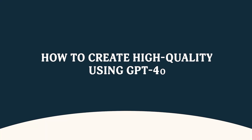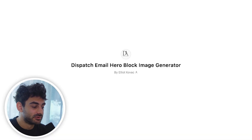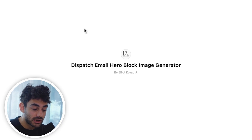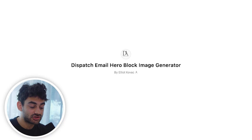Creating a high volume of ad creative is super important, which is why I want to focus on that. But one thing I have not seen anyone talk about or do properly is how to create good-looking emails using ChatGPT 4.0. I've spent around four weeks trying to nail this prompt, experimenting with many different angles, and I finally got something that works really well for email marketing. I created a custom GPT called 'Dispatch Email Hero Block Image Generator,' which generates really good-looking hero blocks for your emails. You input a headline, sub-headline, and a CTA with an image, and it generates a perfect email hero nine times out of ten.